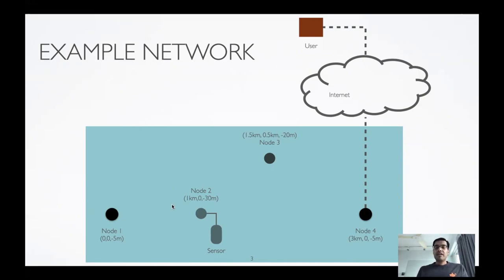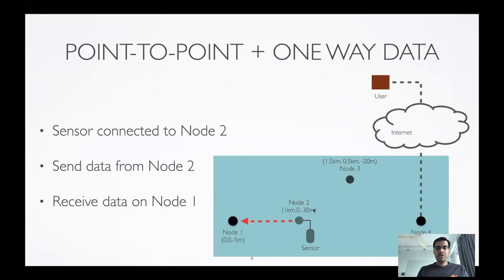Let's look at some simple scenarios and build up from there. A simple scenario in a network like this is that you want data from the sensor attached to node 2 to be sent to node 1. The sensor is generating data at a regular interval and you want to send this data to node 1. Node 1 is also a surface node — you could think of it as a boat that comes in and wants to retrieve data.